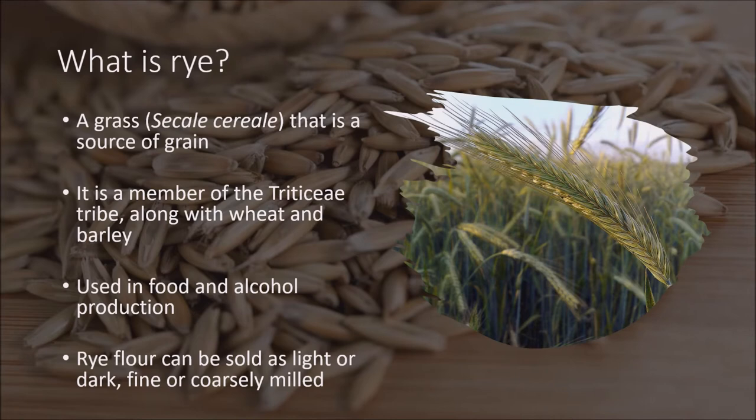So what is rye? Rye is a grass that is a source of grain similar to wheat. It is a member of the Triticeae tribe along with wheat and barley, meaning that rye is closely related to both wheat, which is a member of the genus Triticum, and barley, which is a member of the genus Hordeum. Rye grains are used in a variety of food and alcohol production — for example, they are used to make bread, beer, some whiskies, and certain types of vodka. Rye grains can be eaten whole, either as boiled rye berries or by being rolled, similar to rolled oats.